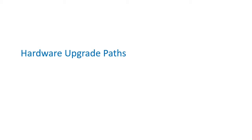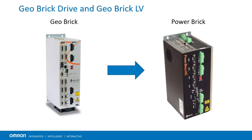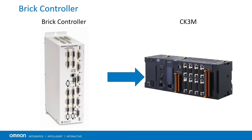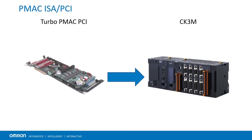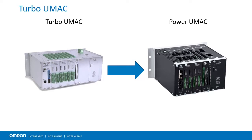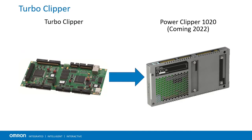Turbo and Power PMAC both have several form factors to choose from. The GeoBrick Drive and GeoBrick LV are replaced with the Power Brick AC arm and the Power Brick LV arm, respectively. The Brick Controller is replaced with the CK3M product line, which is compact and DIN rail mountable. PMAC ISA and PCI form factors are also replaced with the CK3M product line. All cards from the modular UMAC line can still be used with Power PMAC. The CPU is replaced with the UMAC 1020 CPU or UMAC 1040 CPU. The AXIS interface card can be upgraded to an accessory 2043. In some cases, the CK3M product line can be used instead. The Turbo Clipper is replaced with the Power Clipper 1020, which is coming in 2022.